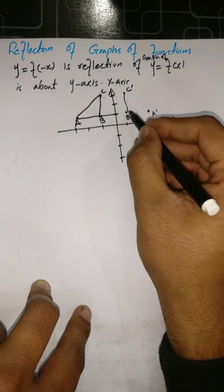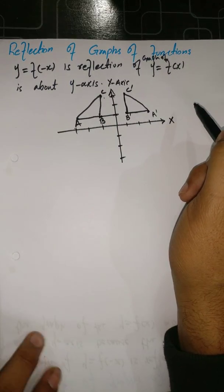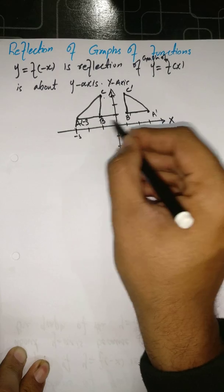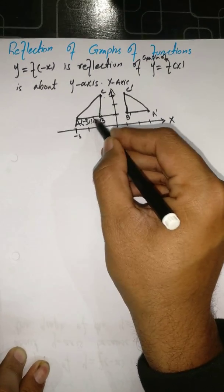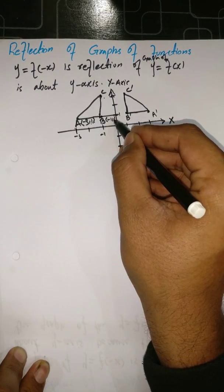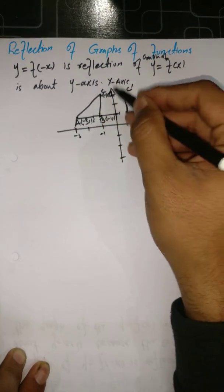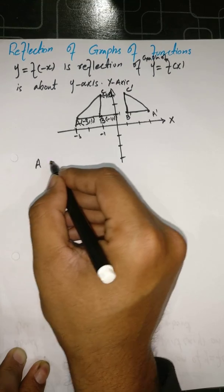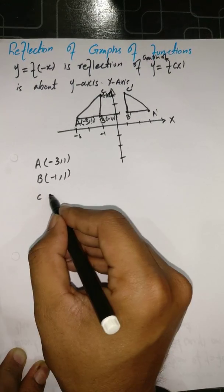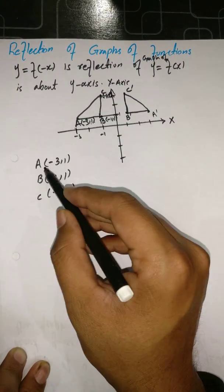When we join these reflected points they form a triangle, which is the reflection of triangle ABC. The coordinates of the original triangle are: A is (-3, 1), B is (-1, 1), and C is (-1, 3). These are the coordinates of our original triangle.